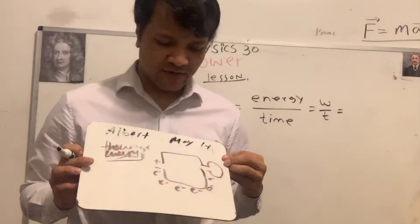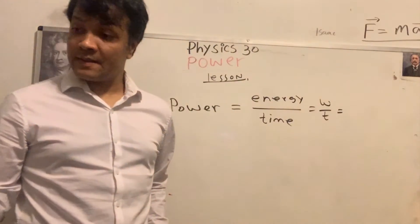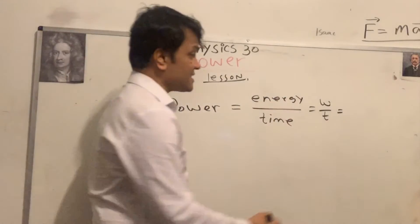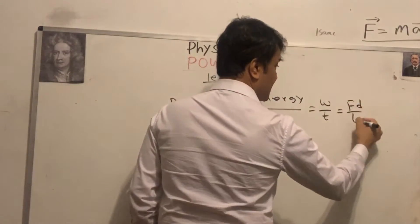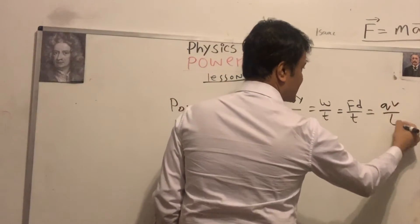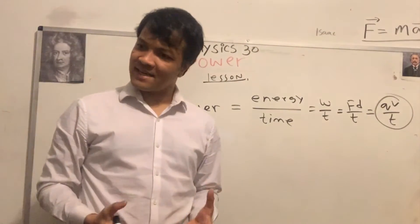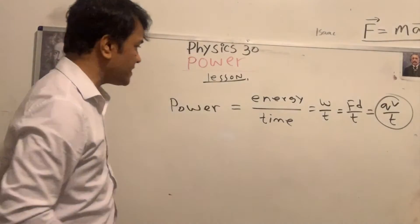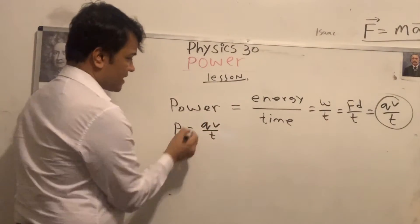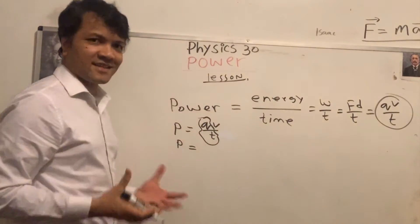This student's work looks good. So power = fd/t, and we proved that fd = qV, so power = qV/t. They're all the same thing, but what we need is qV/t.